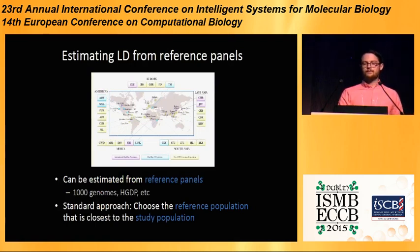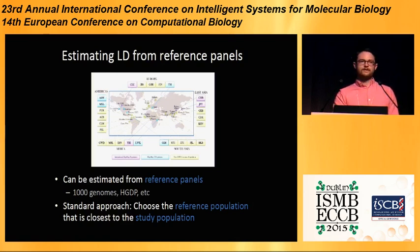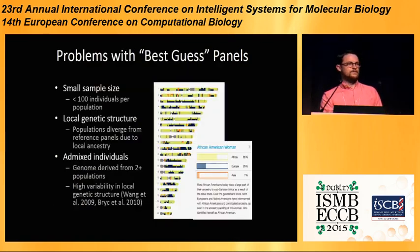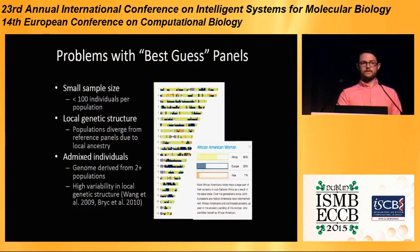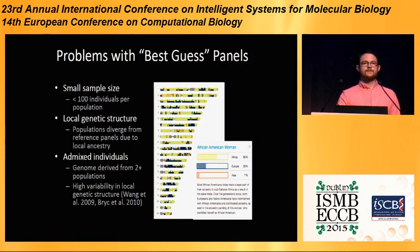The good news is that there are reference panels, such as 1,000 Genomes, which have full genome sequences of a little over 1,000 individuals from various populations in the world. The standard approach is to choose a reference population that is close to the study population — if you're dealing with Europeans, you choose maybe the CEU population, or if you're dealing with Africans, you choose maybe the YRI population. This works relatively well, but there are a lot of problems. One of the large ones is that the sample size is rather small — since there's only about 1,100 individuals from the entire world, you get about 100 individuals per population.